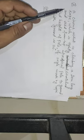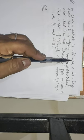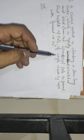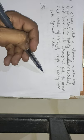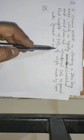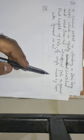Students, here's the question: A circus artist is climbing a 20 meter long rope which is tightly stretched and tied from the top of a vertical pole to the ground. Find the height of the pole if the angle made by the rope with the ground is 30 degrees.